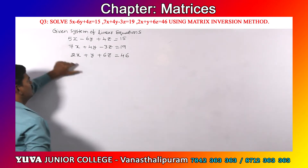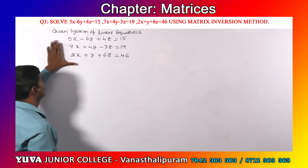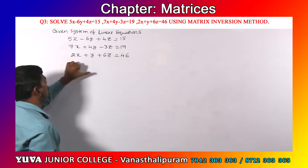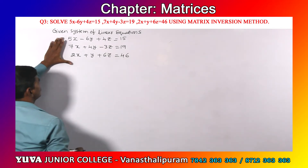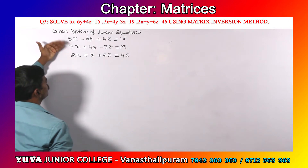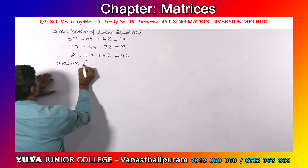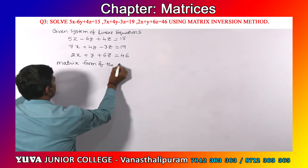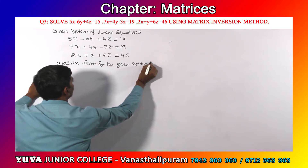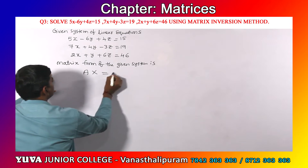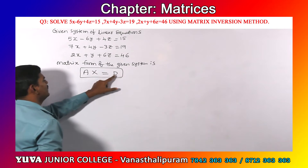Now we are asked to solve these three equations. Solving equations means finding the unknowns — here x, y, z are the unknowns, also known as variables. Let us convert the given equations into matrix form. The matrix form of the given system is A into X equals D, giving us three matrices A, X, and D.